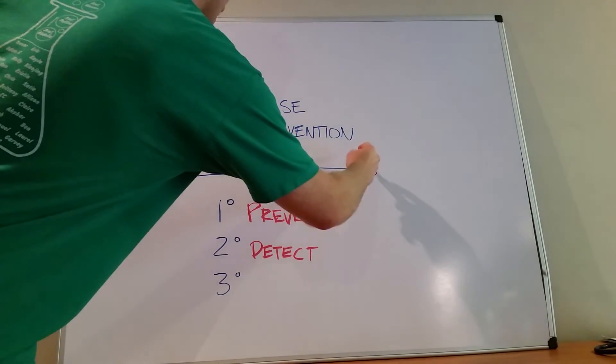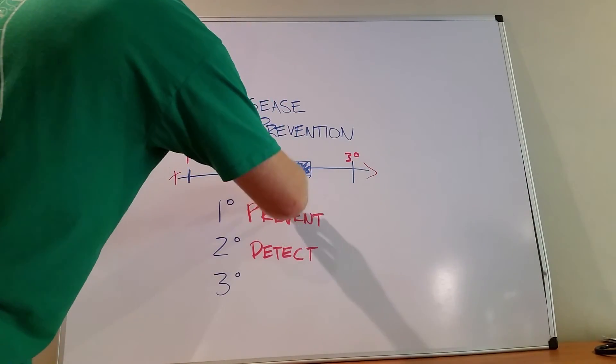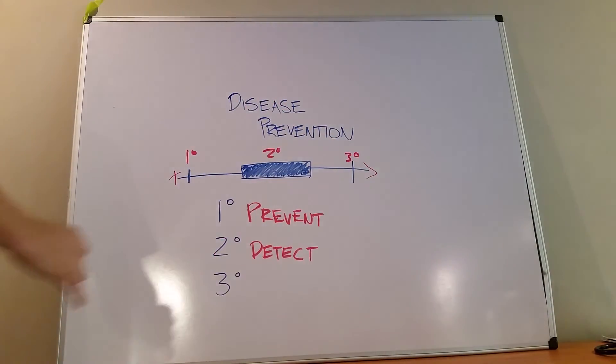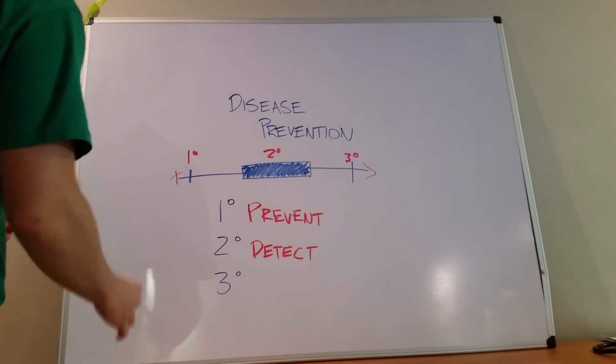Now, tertiary, or the third one here, is somewhere further down the line. So this is when you have the disease, right? Let's say you did all the right steps.